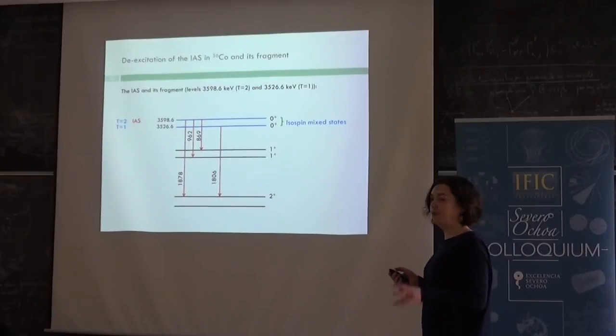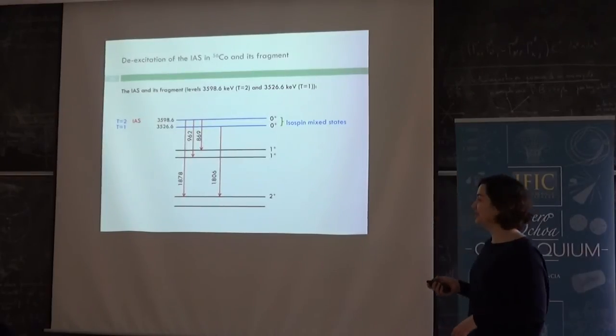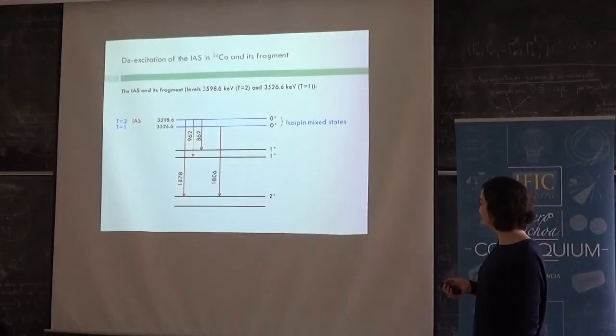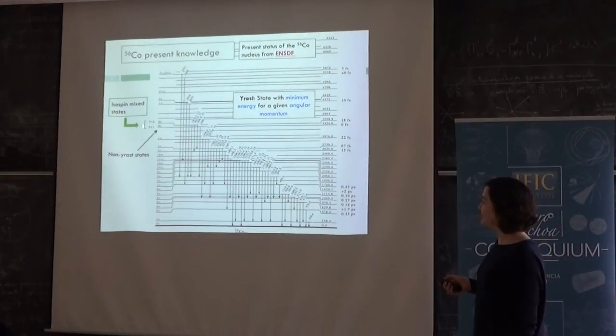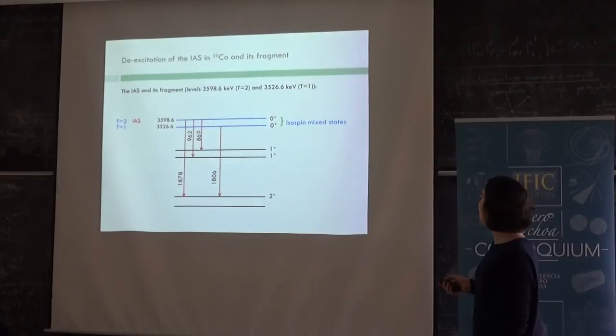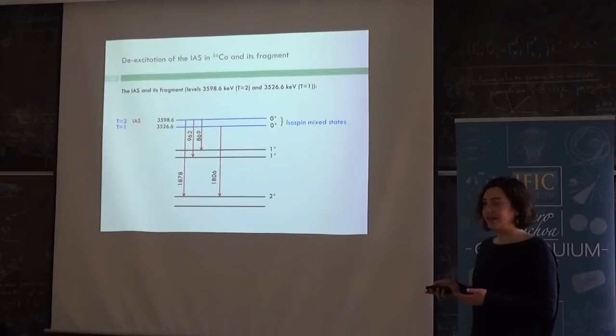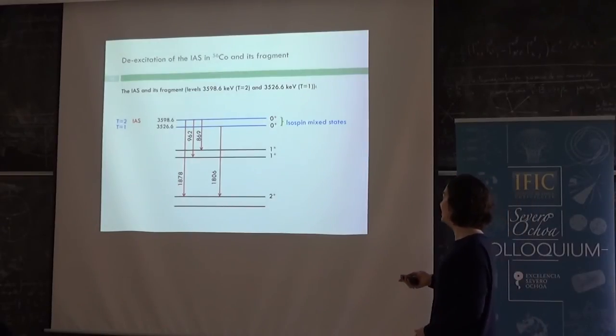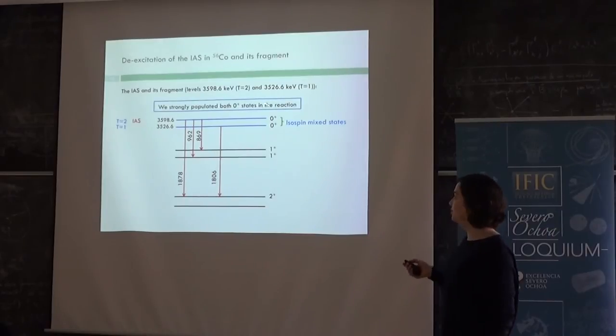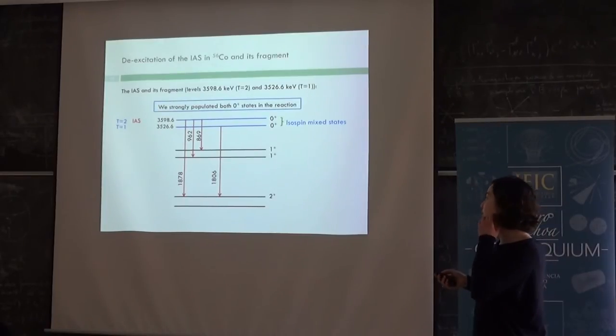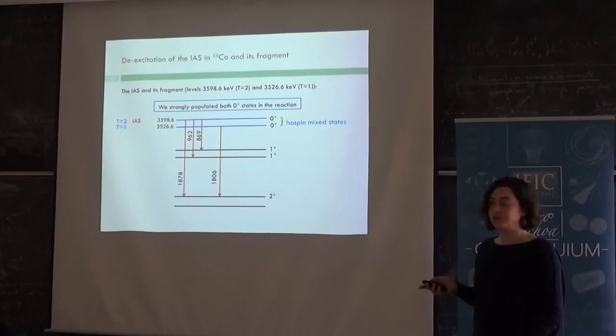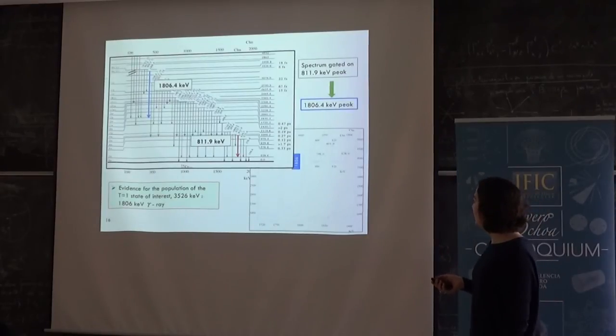So here I do like the zoom on the nucleus, on the levels I want to study. And those are the two isospin mixed. So this is a zoom on those two. And first of all, what we wanted to do is populate those two non-yrast states, which is not easy because of the kind of reaction. And nevertheless, we strongly populated both states, which was one of the goals of the experiment.